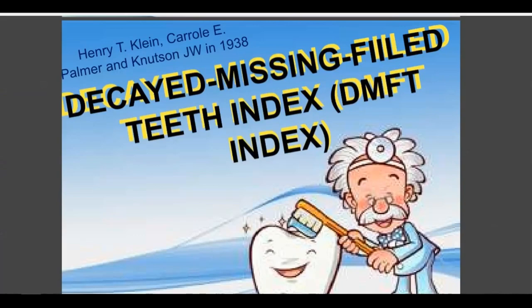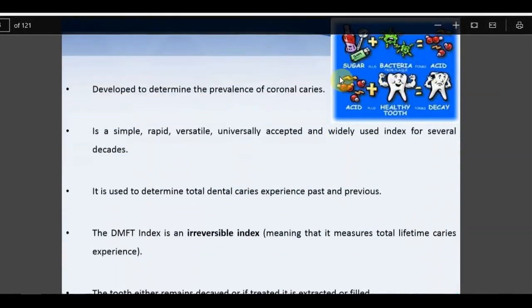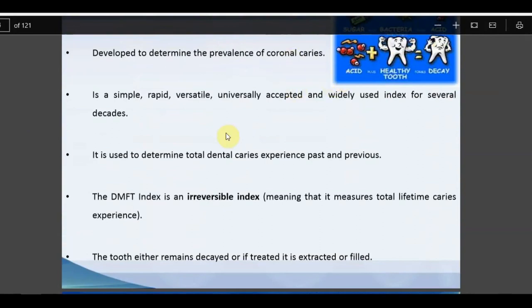Today we cover dental caries indices — specifically DMFT and DMFS. The DMFT index was given by Henry T. Klein, Carrole Palmer, and Knutson in 1938. It stands for Decayed, Missing, and Filled Teeth. It is a very simple, rapid, and versatile universally accepted irreversible index. The idea is to measure caries experience — including teeth filled due to caries and teeth missing due to caries.